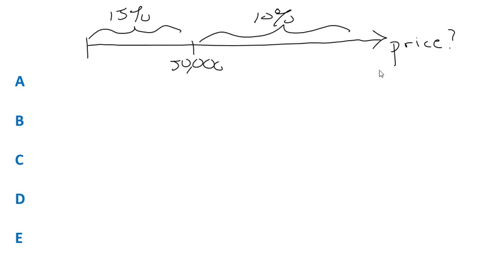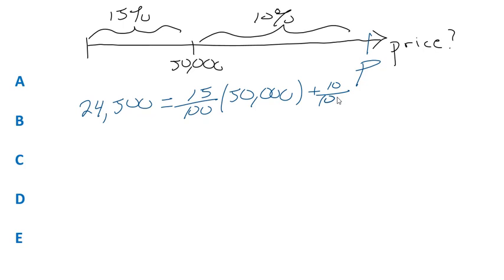Another way to solve this problem is let's call the price, let's call the price P. The commission, we know 24,500, the commission would be equal to what? Still 15% of the 50,000. So we'll write that in there. Plus, well now if we're looking at P, that represents the total price. We're going to earn 10% on what? 10% on the total price P minus 50,000.